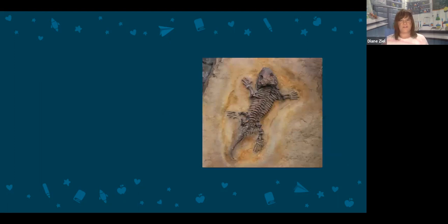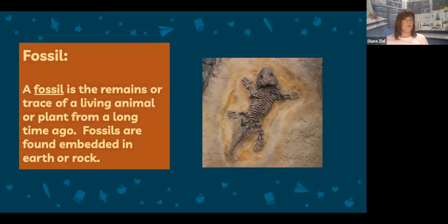Here you see a picture of an animal skeleton that is embedded or inside of a rock. Which vocabulary word is this an example of? If you said fossil, you are 100% correct. A fossil is the remains or trace of a living animal or plant from a long time ago. Fossils are found embedded in earth or rock.